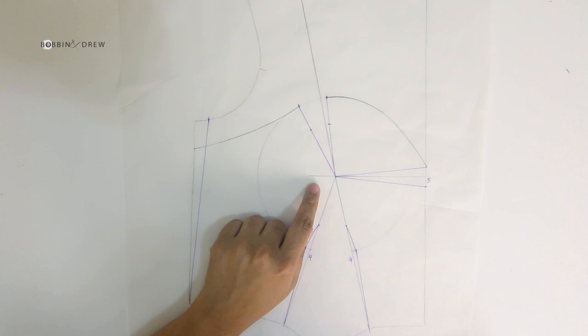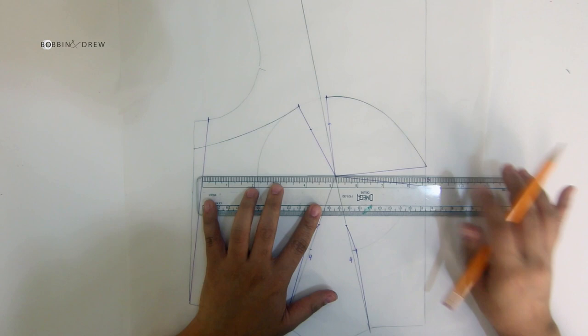Before this pattern gets cut into panels, this bust line right here needs to be extended and it will serve as a guide for marking the drainage.